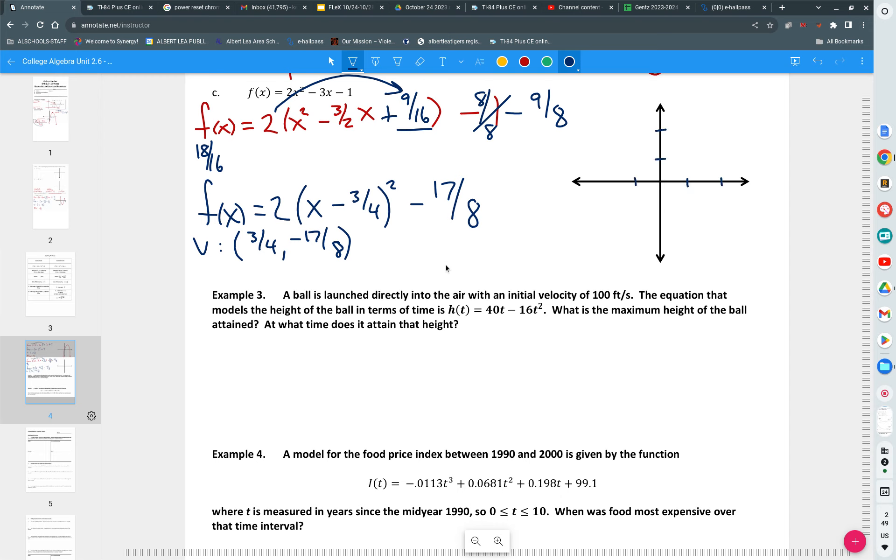Looks like I have a vertex located at 3 fourths is the horizontal shift, negative 17 eighths is the vertical shift. So I'm just going to make a 2 by 2 graph. It doesn't have to be anything special. We're just going to get a general graph down, get a little bit of an idea of what the shape looks like. I'm going to go over 3 quarters to the right, and I'm going to go down 17 eighths. 17 eighths is about how much? Just over 2. Just over 2. So I'm going to go down a little bit more than 2. Okay, it goes up. So does it have a max or a min? Minimum value of negative 17 over 8. There we have.